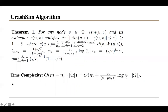Next, we analyze the time complexity of the CrashSim algorithm. It first generates a reverse reachable tree for the source U, which costs O(M). Then the CrashSim algorithm has NR iterations, and in each iteration it visits each node in the candidate node set Omega. The total time complexity is shown here.